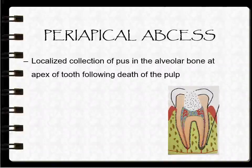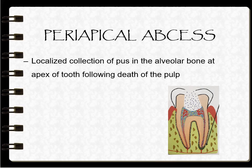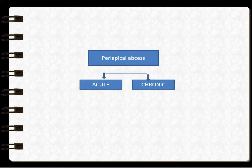Next is the periapical abscess. Periapical abscess is a localized collection of pus in the alveolar bone at the apex of teeth following the death of the pulp.